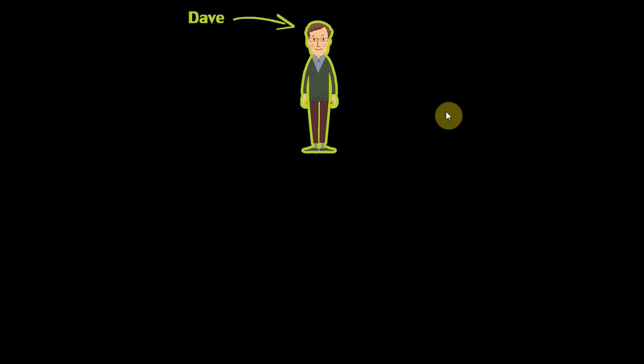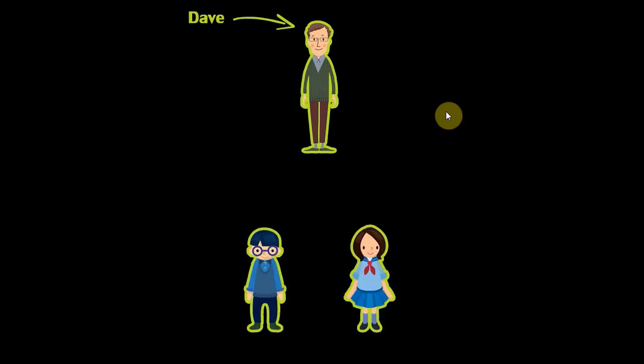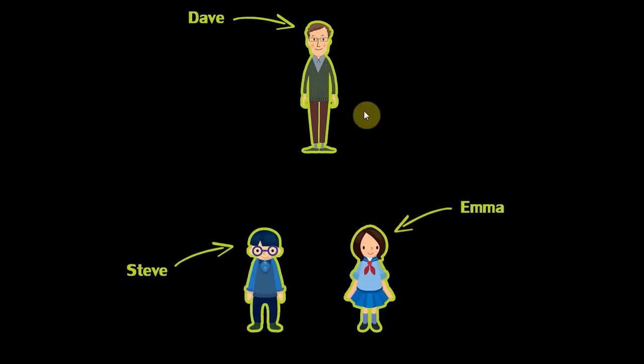To start off, here we have this man. This man's name is Dave and Dave has two kids, one of which is Emma and the other one is Steve. Now because these are Dave's kids, there are certain things that they'd have that would be the exact same as Dave. For example, they'd have the same surname as Dave.